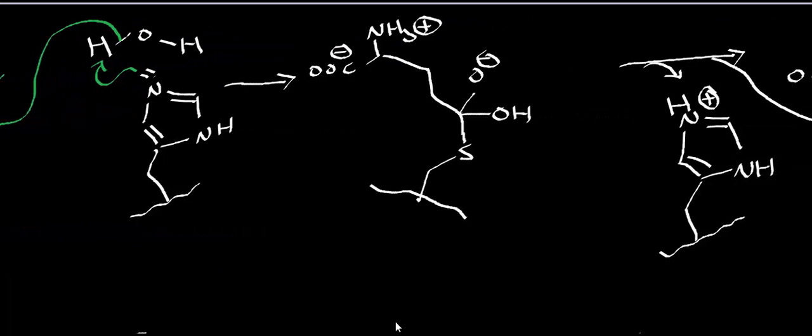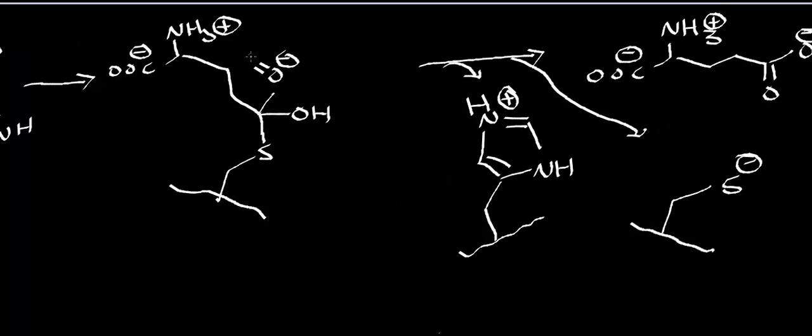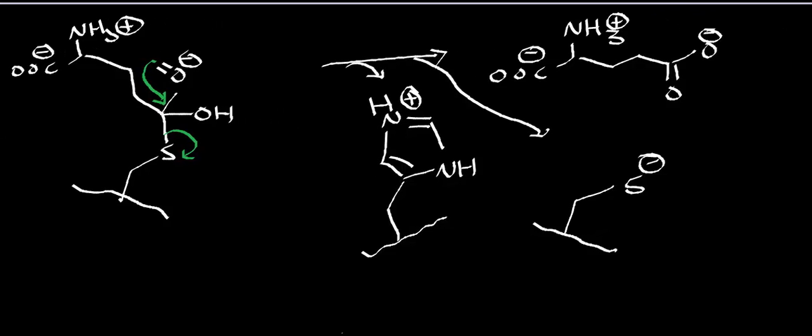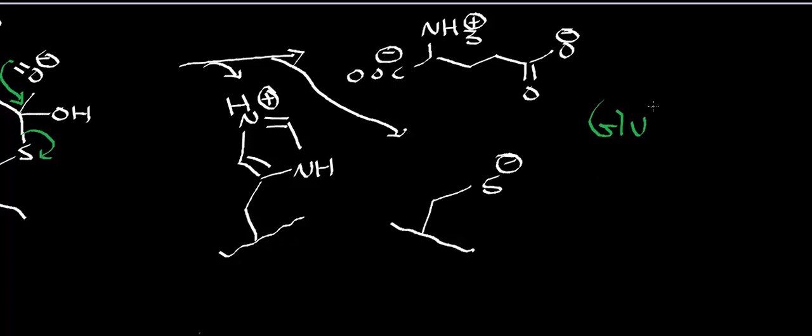Now we have this tetrahedral intermediate and a protonated histidine. The tetrahedral intermediate is going to collapse. And as the carbonyl bond reforms, it's going to kick off the cysteine thiolate as the leaving group. Now we've regenerated the resting state protonated Schiff base histidine and the thiolate, that is the cysteine residue. And what we get is glutamate.